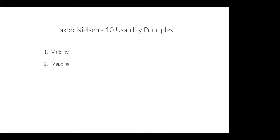Number three is freedom — provide good defaults and options to undo previous actions. People always make mistakes on a website or take the wrong path, so freedom means allowing them to easily return to the previous state and rethink their steps — for example, a back button, or having breadcrumbs they can click to go back. This allows freedom of navigating freely from one step to the next.